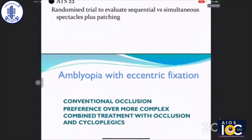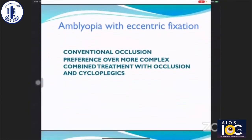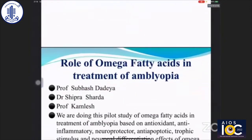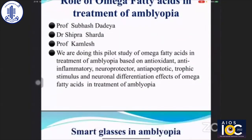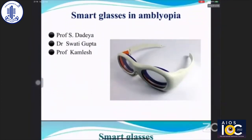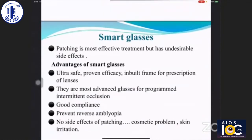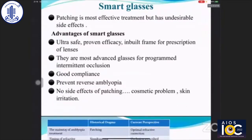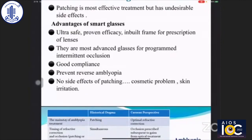ATS-21 and ATS-22 are also undergoing. Amblyopia with eccentric fixation is a new area of research. Though conventional occlusion has been recommended, there are reports that inverse occlusion may be equally effective in these cases. Regarding omega fatty acids in treatment of amblyopia — based on their antioxidant, anti-inflammatory, neuroprotective, and neurodifferentiation effects — we did not find any useful effect. Smart glasses: patching is the most effective treatment but has undesirable effects. Smart glasses are ultra-safe with proven efficacy — they are the most advanced glasses for programmed intermittent occlusion, have good compliance, prevent reverse amblyopia, and have no side effects. The only limitation is cost.